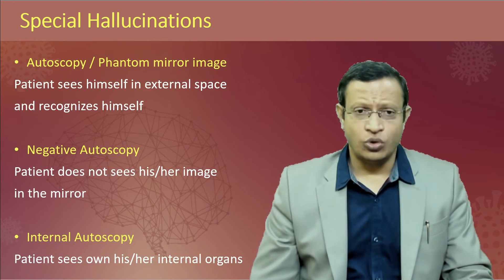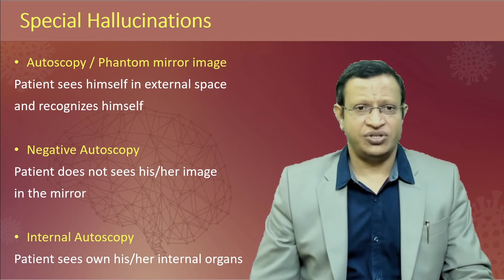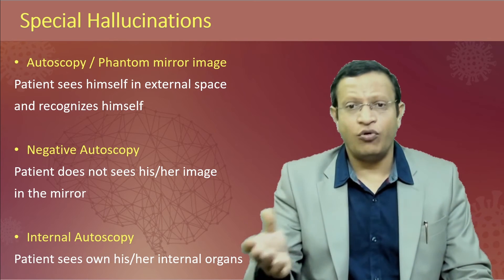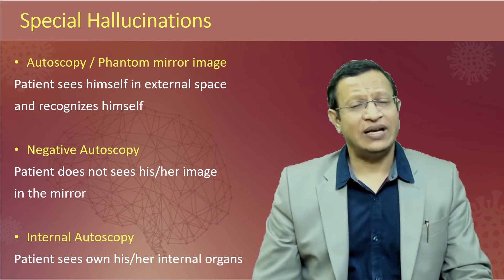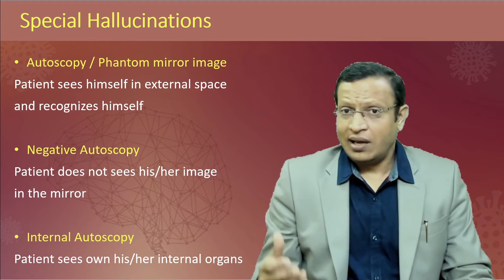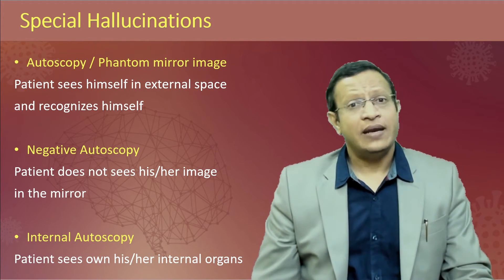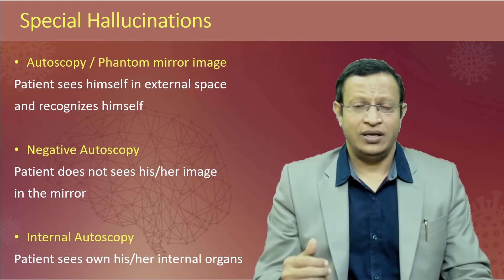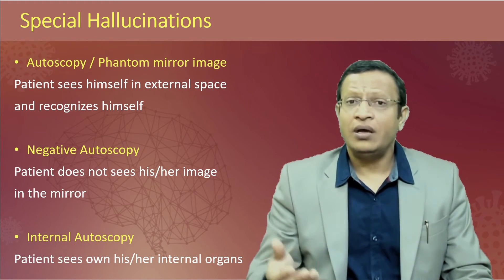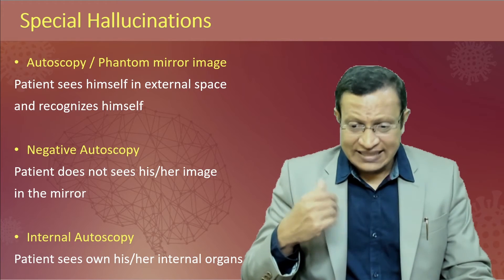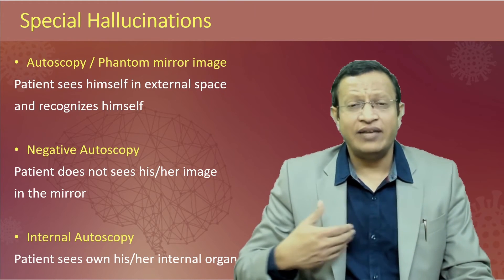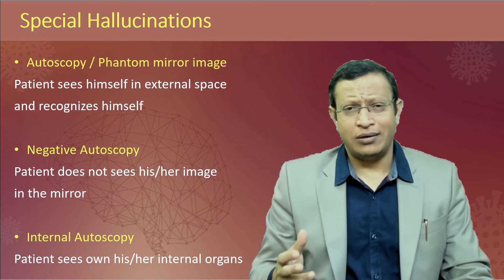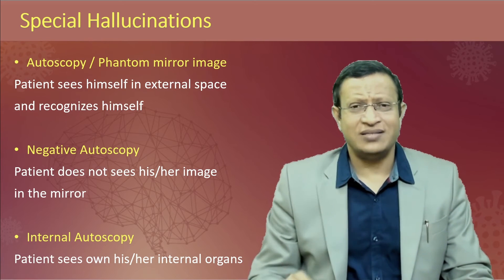Autoscopy, or what we call phantom mirror image: the patient sees himself in external space — he can see himself walking around. This is commonly seen in schizophrenia and he recognizes that it is himself. Negative autoscopy: the patient does not see himself in the mirror; whenever he looks he feels that there is nobody there. Internal autoscopy: the patient can see his internal organs — he says, 'I can see my heart, I can see my stomach,' though not exactly to the anatomy.